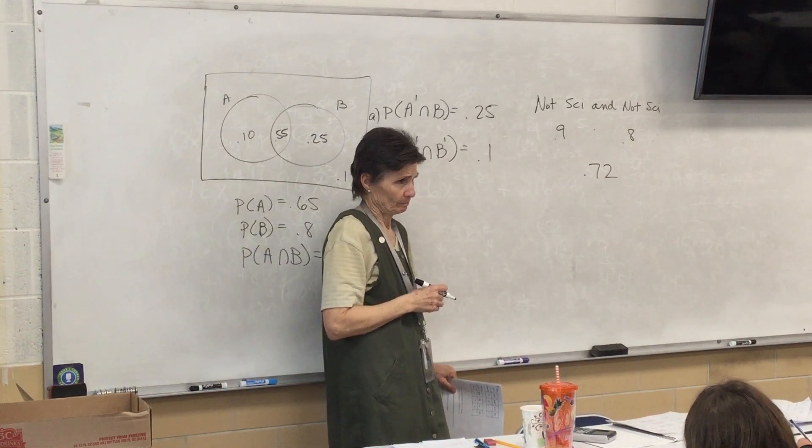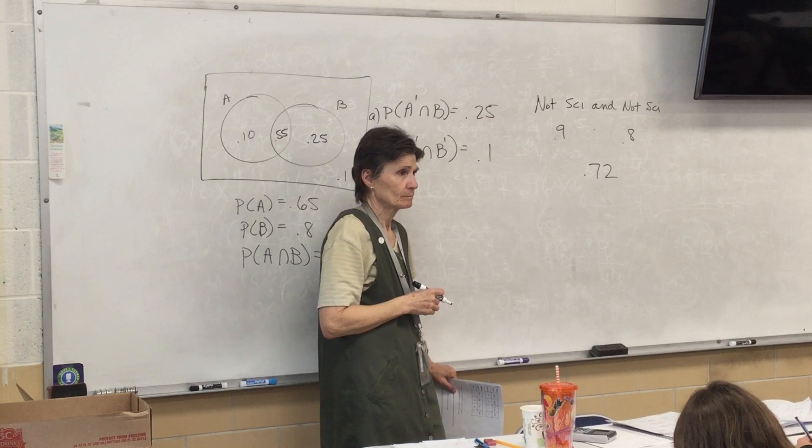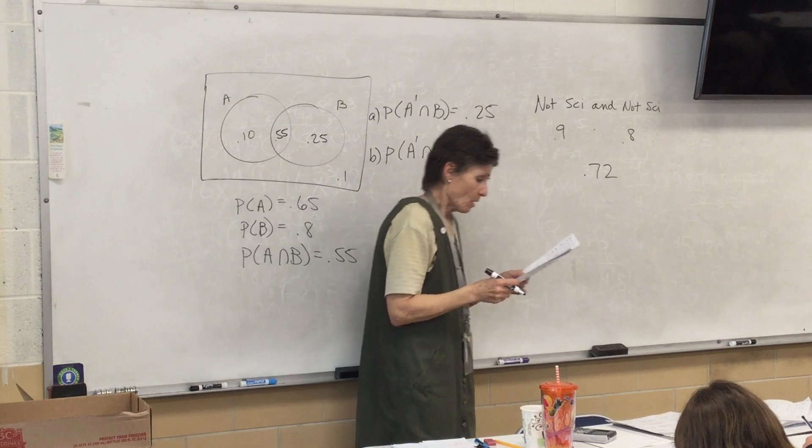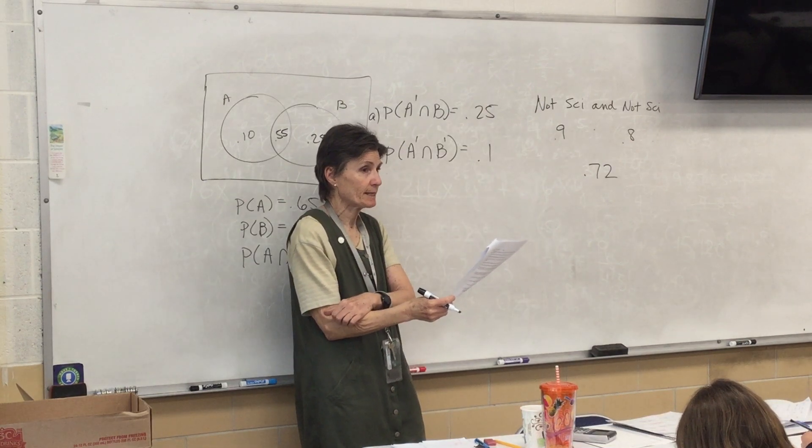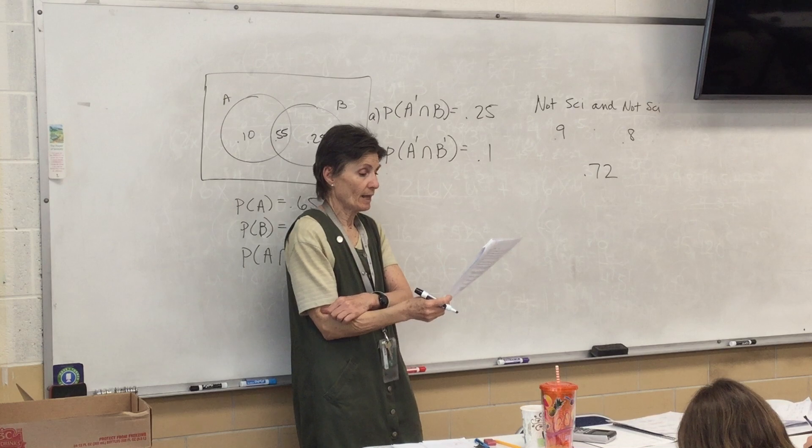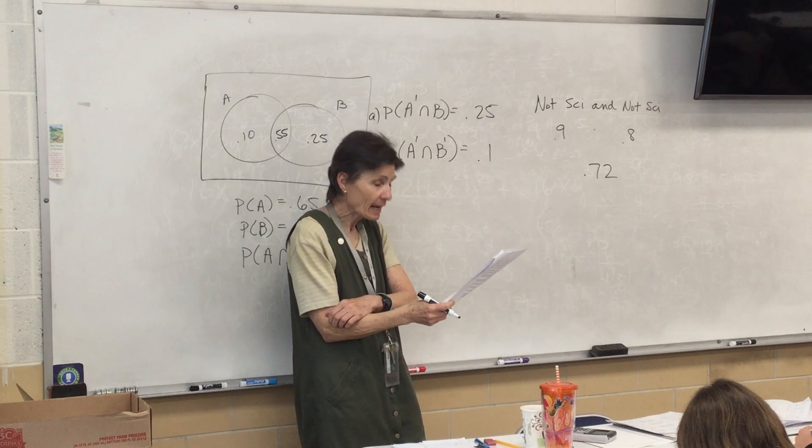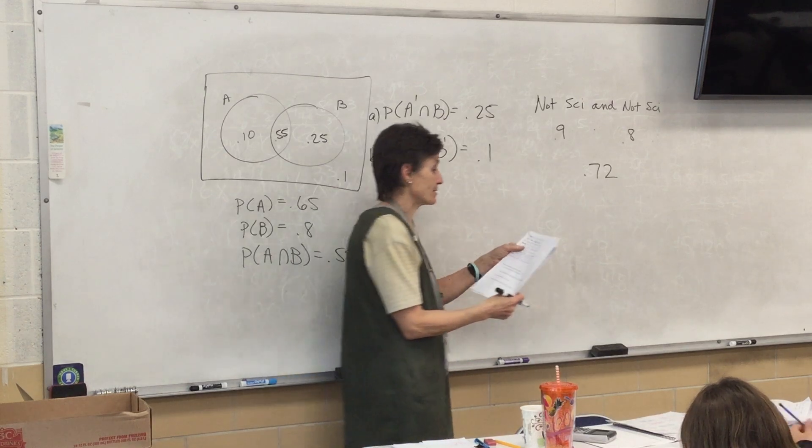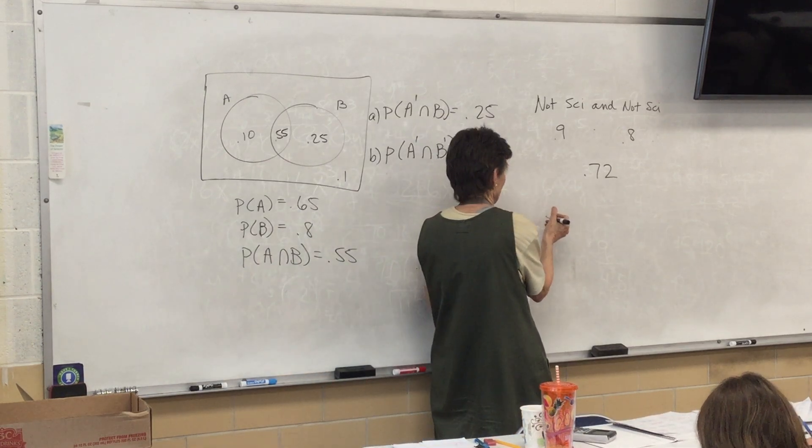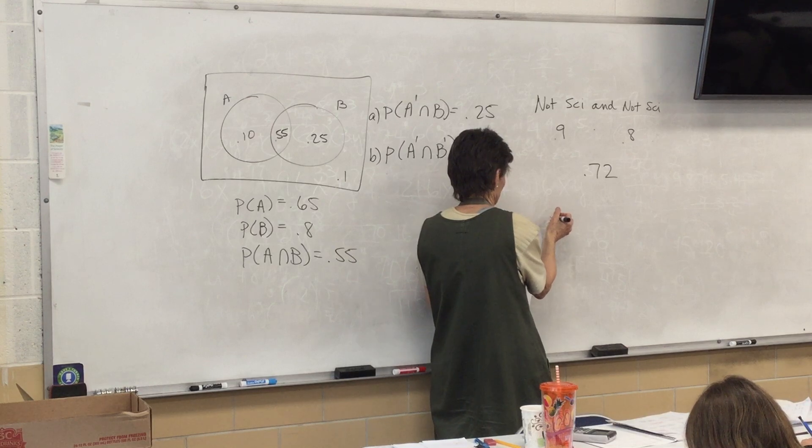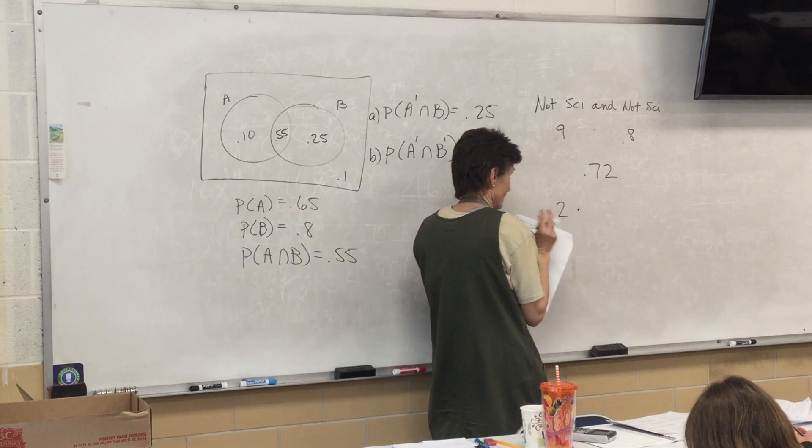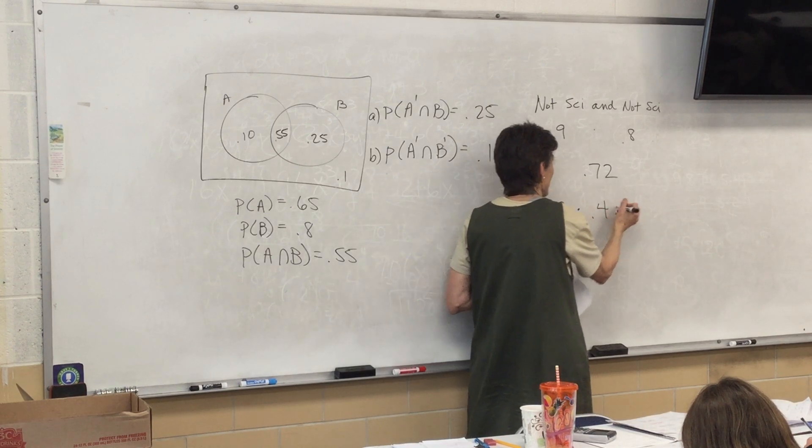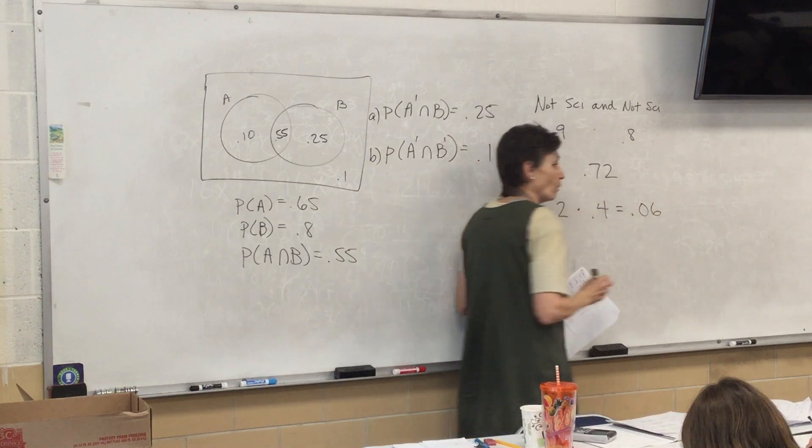Next. What is the probability that the first kid will like English and the second one likes math? All right. So the first one likes English. What's that? 0.2. And the second one likes math. 0.3. So that answer is 0.06.